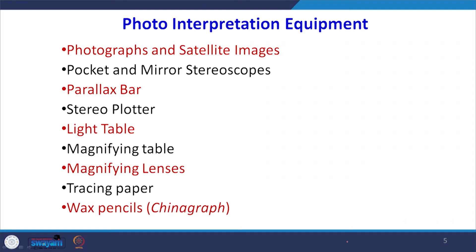There are certain simple devices used in photo interpretation. We start with black-and-white, aerial, or color photographs. We require a pocket mirror stereoscope, as we sometimes need to see a 3D model, along with a parallax bar, stereo plotter equipment, light table, and magnifying equipment. These help magnify details and resolve confusion when identifying linear features — whether something is a road, canal, or railway line. We also use tracing paper, glass marking pencil, and china pencil to mark objects on the photograph.